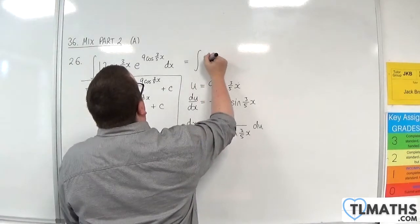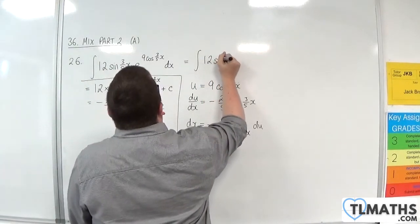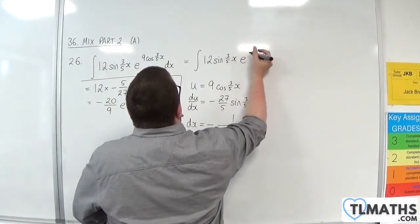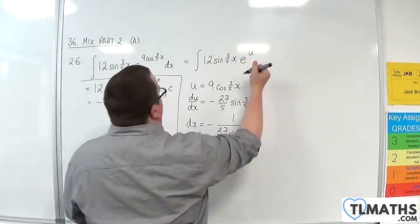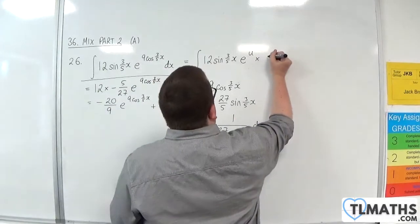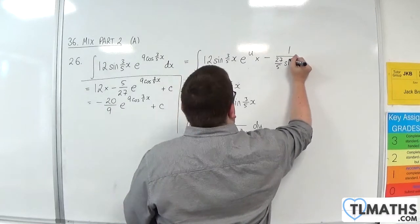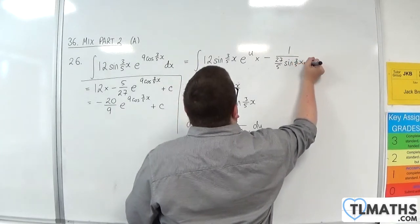So what have I got? I've got 12 sine of 3/5 x, e to the u, and the dx is replaced with this, so minus 1 over 27 over 5 sine of 3/5 x.